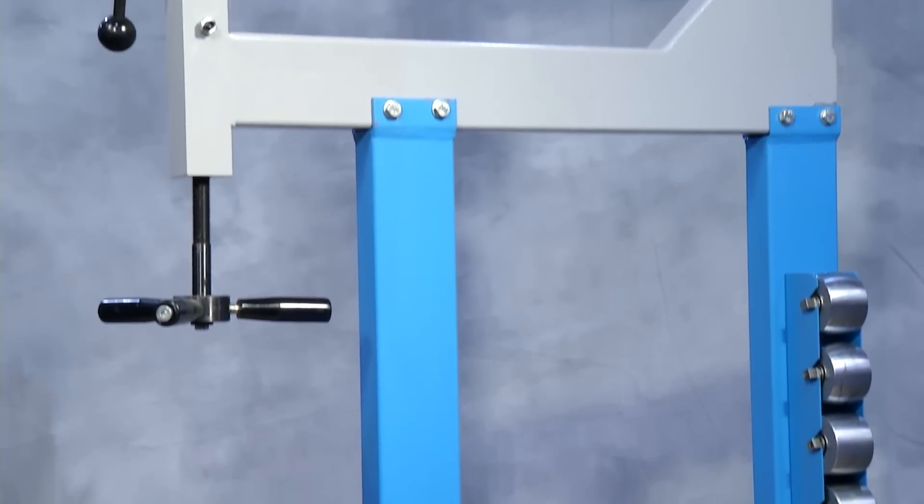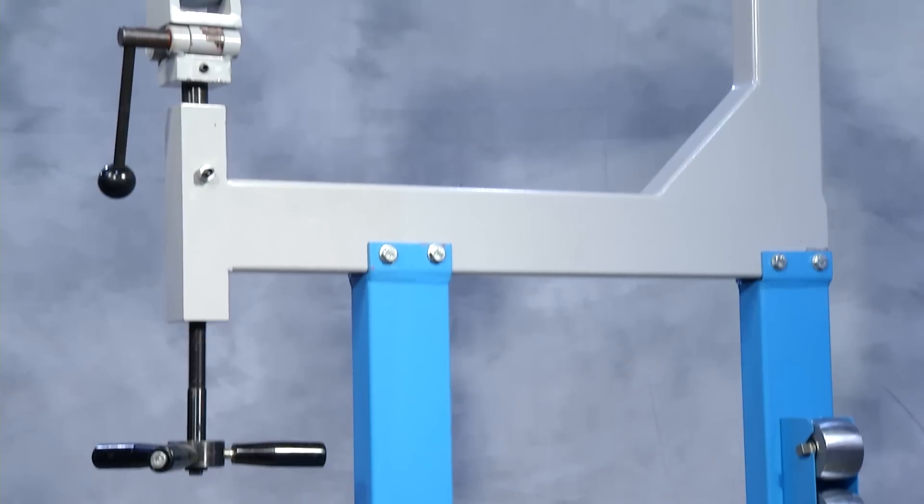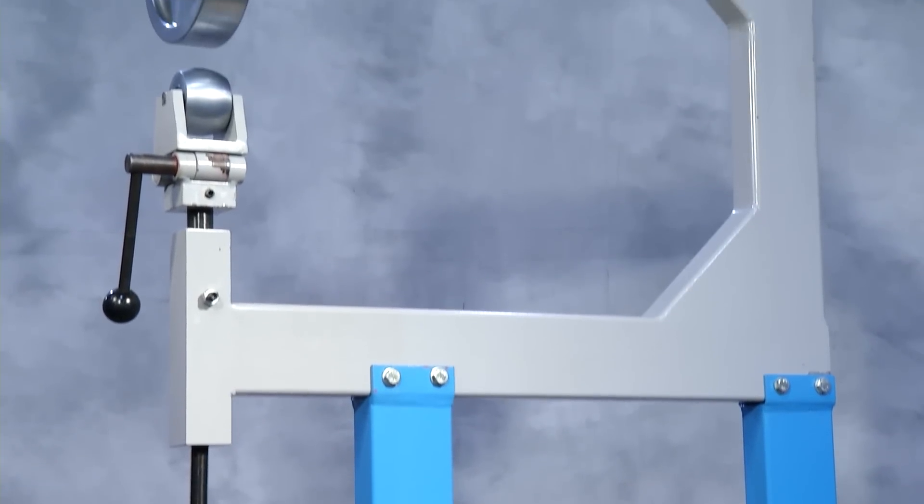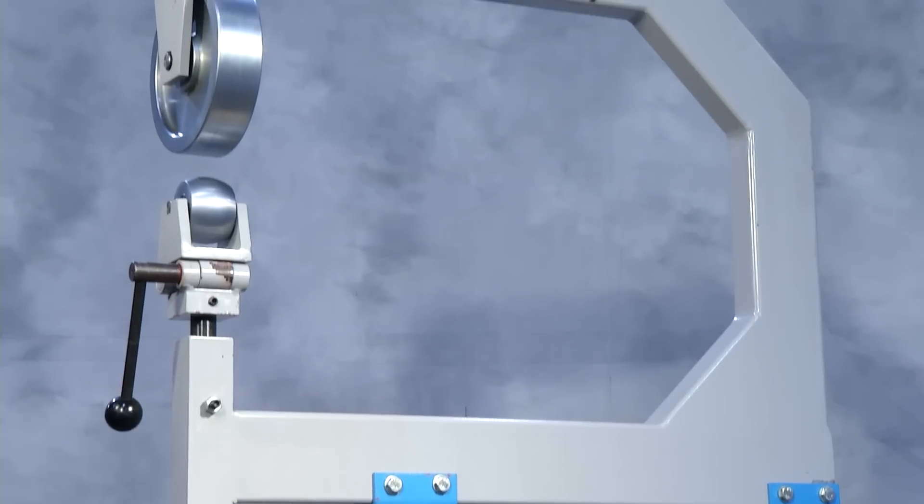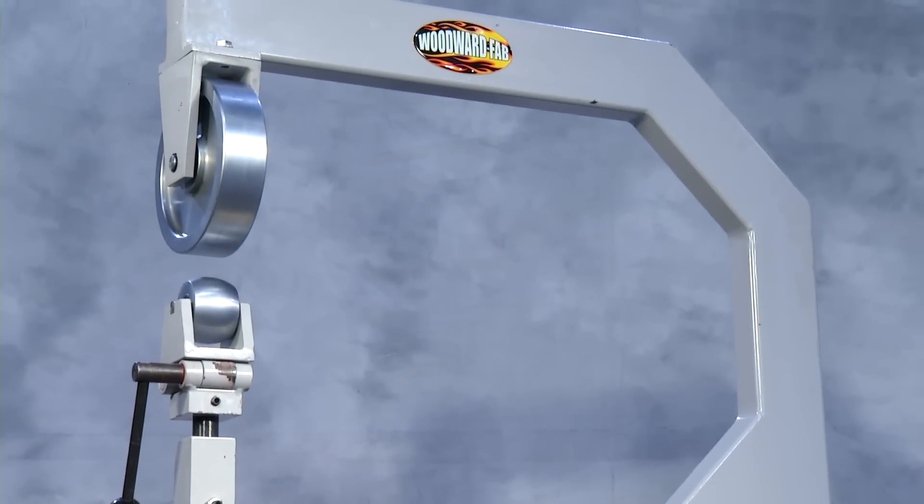This wheel has a 2 by 4 inch rectangular frame with a quarter inch wall thickness. This will prevent flexing or twisting even when forming steel up to 1/16th of an inch.